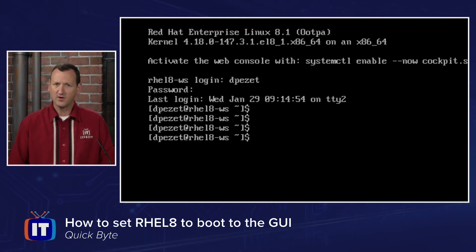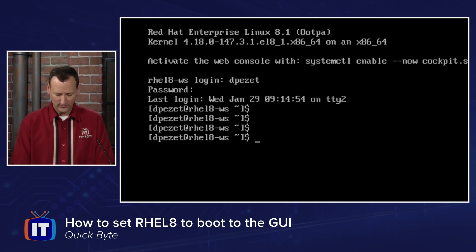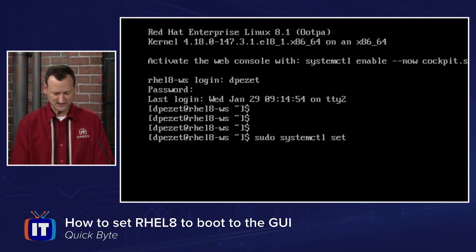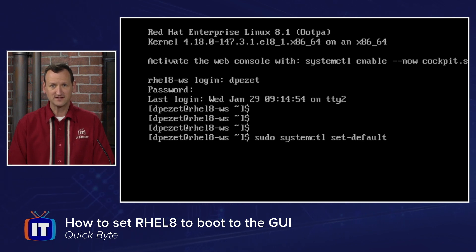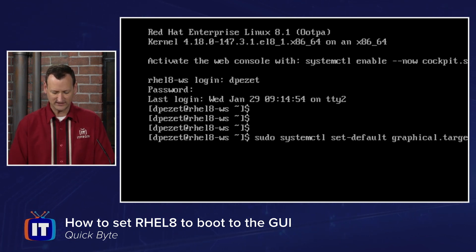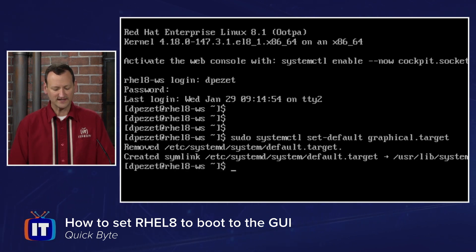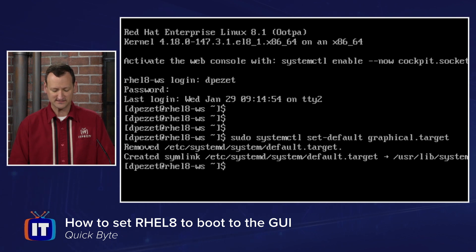Once I'm there, what I want to do is change the default boot environment and we do that by issuing sudo systemctl set-default and then specify what environment we want. I want graphical.target and once we punch that in, that's going to change that default and you'll see a message about it updating some symlinks.